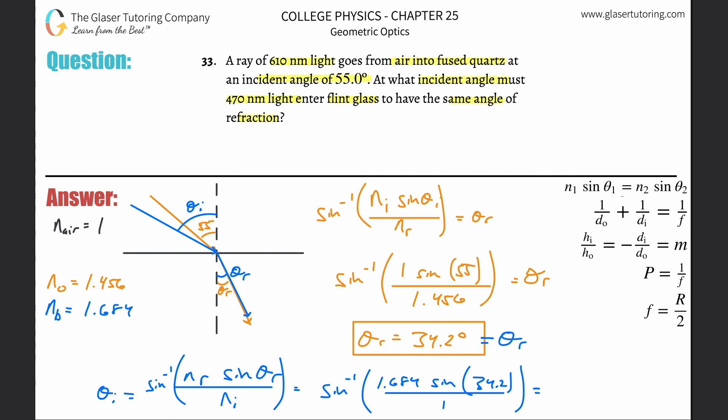Plug that all into the calculator. Inverse sine of 1.684 times sine of that exact answer from before, and you don't have to worry about dividing by 1. We get a value of 71.3 degrees. That would be your answer.